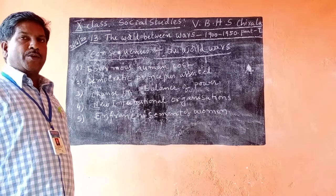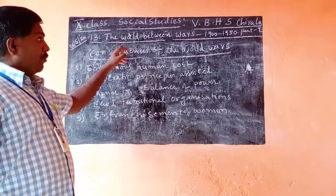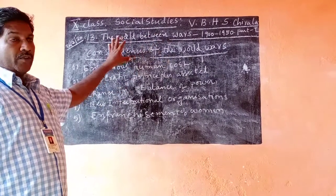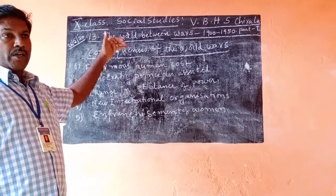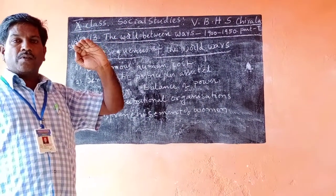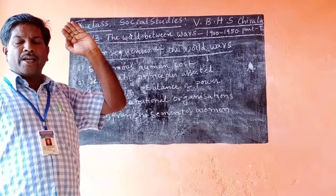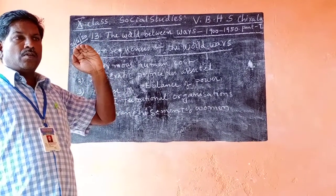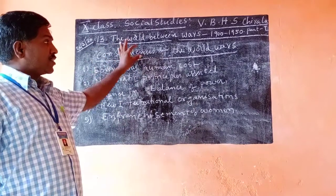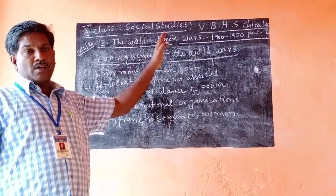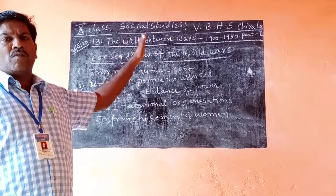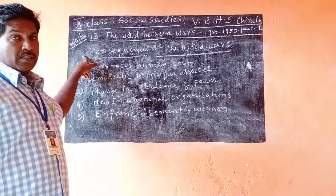Now I am going to discuss the continuous part, the world between wars, Part 3, 1900–1950. Yesterday I discussed the causes of the Second World War. So now we are going to discuss the important topic: consequences of the world wars — the main causes for World War 1 and World War 2. So these two things we will discuss right now.